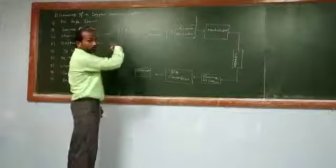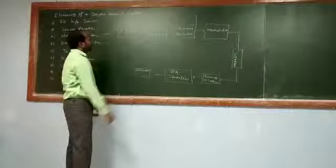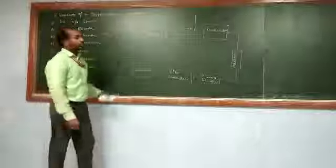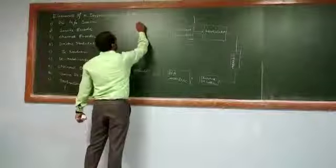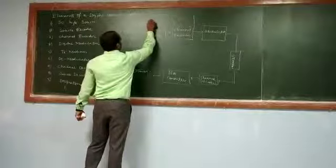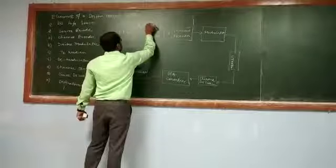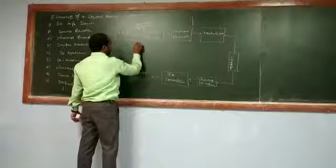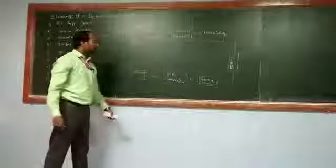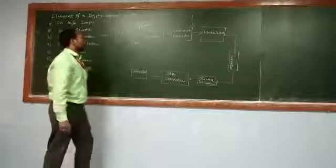As I said, we need the discrete information source. The output of the discrete information source is the sequence of symbols. That you can represent with some BK, which is a sequence of symbols, or you can represent with any other notation also.